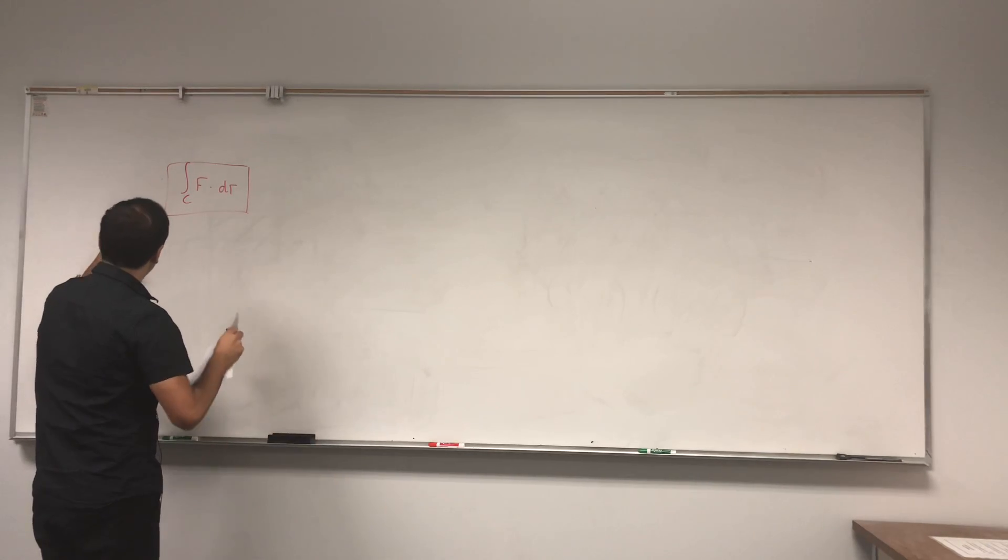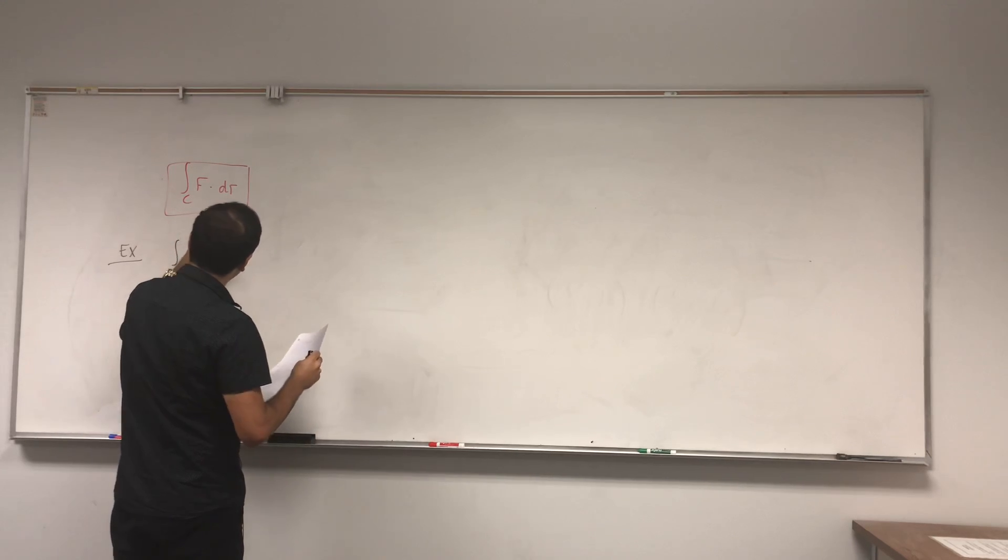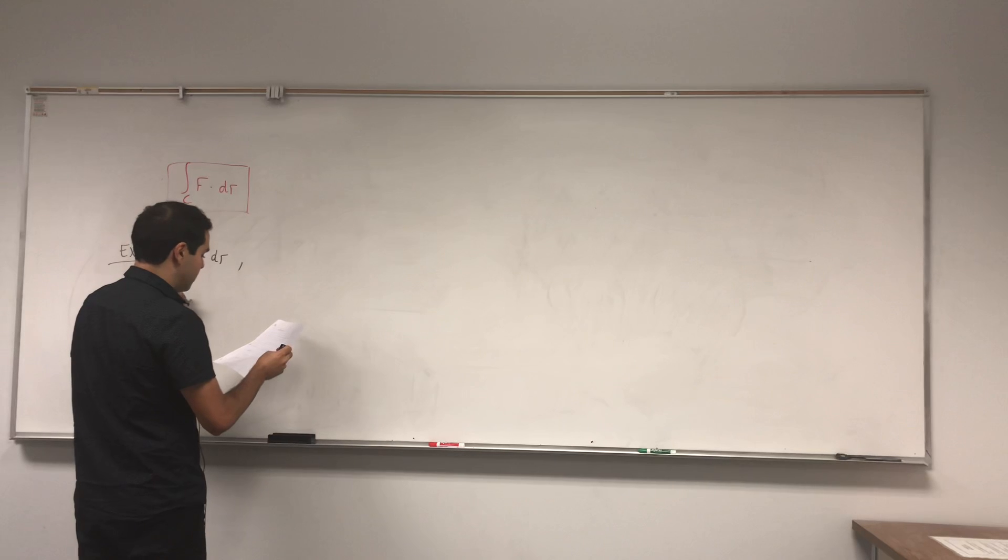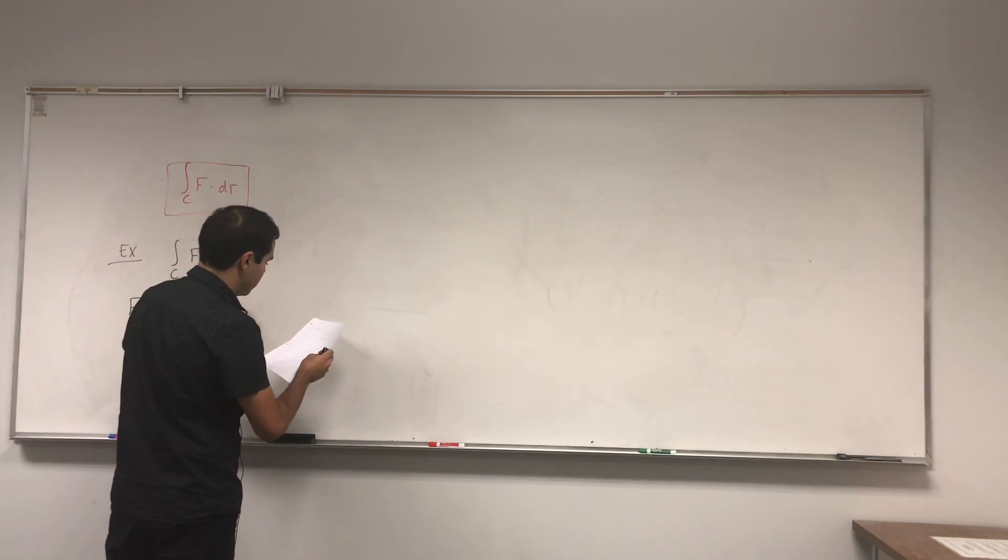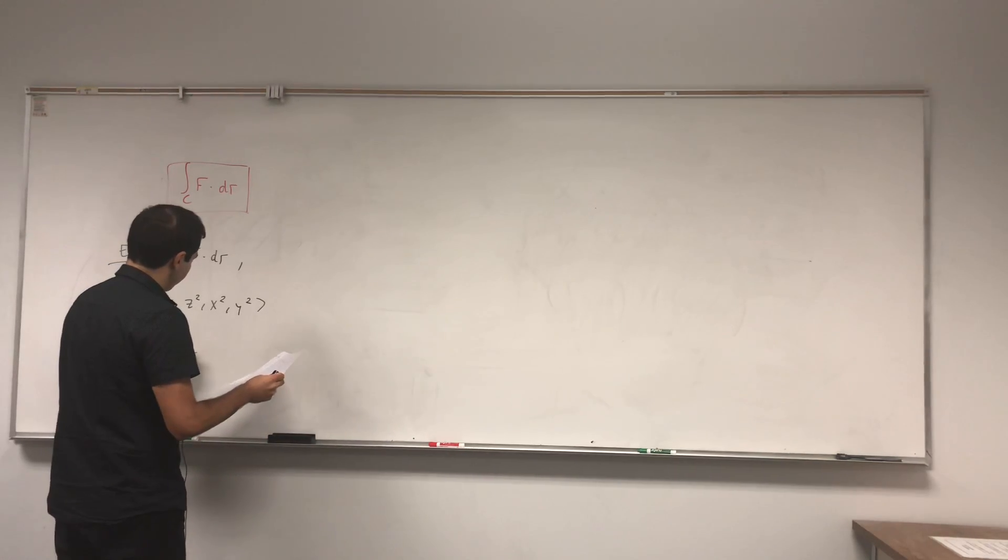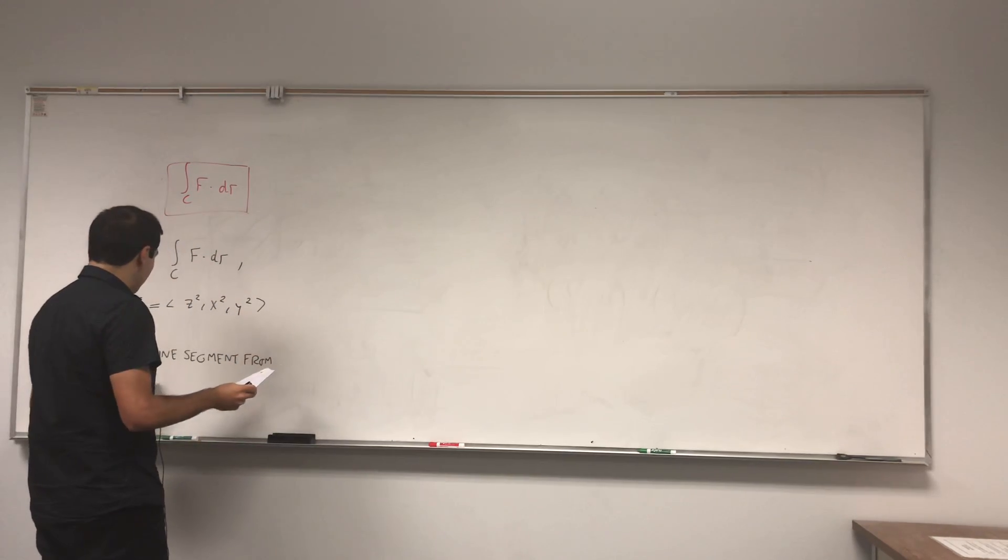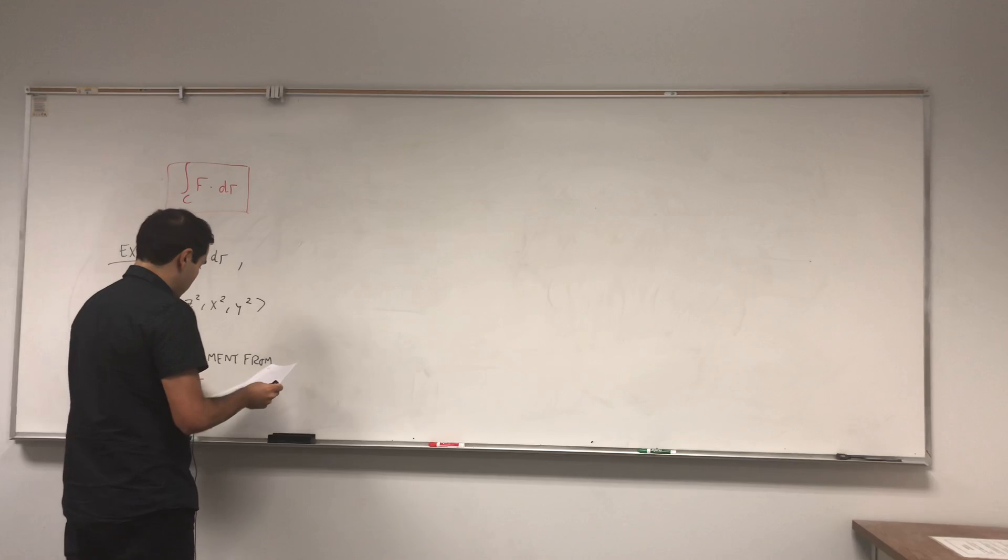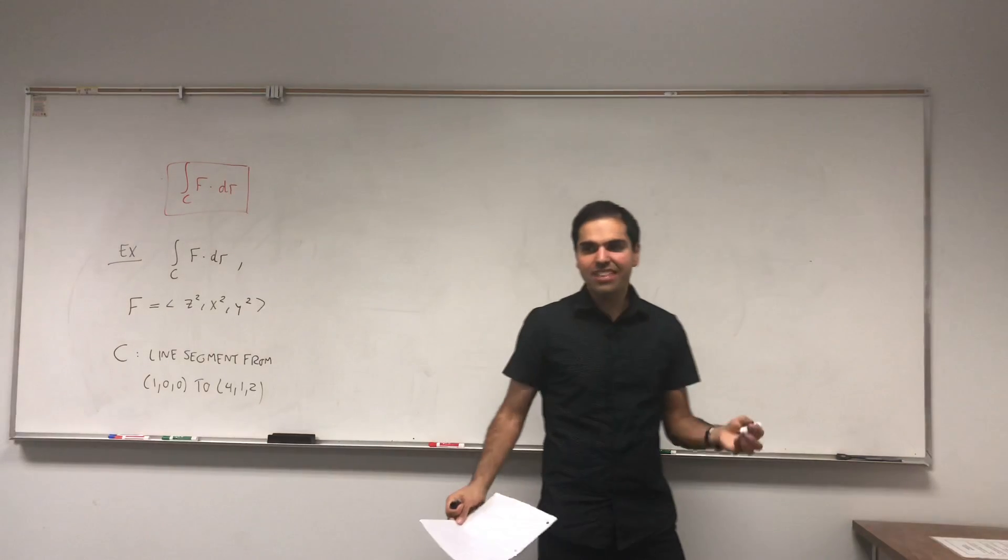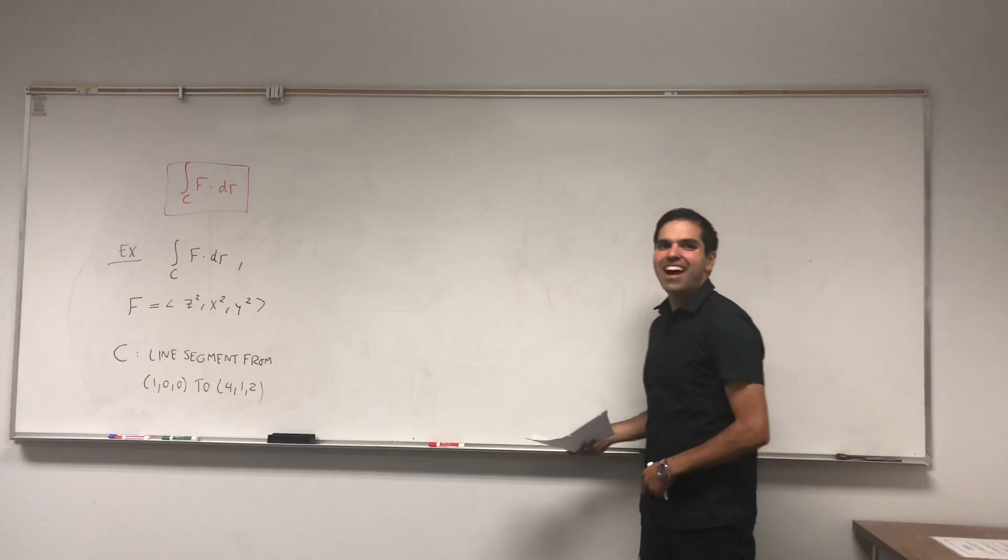So today, let's just calculate the line integral of f dotted with dr, where f is the vector field z squared, x squared, y squared, and C is the line segment from (1, 0, 0) to (4, 1, 2). In this case, we have a 3D vector field, but that won't stop us. Math is powerful.